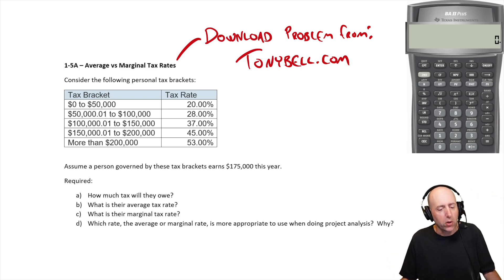Let's jump into the problem. Consider the following personal tax brackets. And there's a bunch of tax brackets. It says, assume a person governed by these tax brackets earns $175,000 this year.